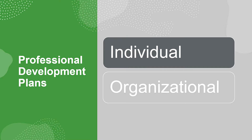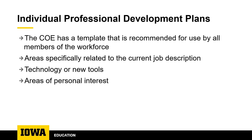When thinking about professional development plans, there are two levels to consider. At the basic level are individual professional development plans — each person in your unit having a plan for what skills and knowledge they want to develop. The college has a template recommended to be completed at least annually for all members of the workforce. Items might include things related to their current job description, learning new technology tools, or areas of personal interest related to the area of work that might have future relevance.